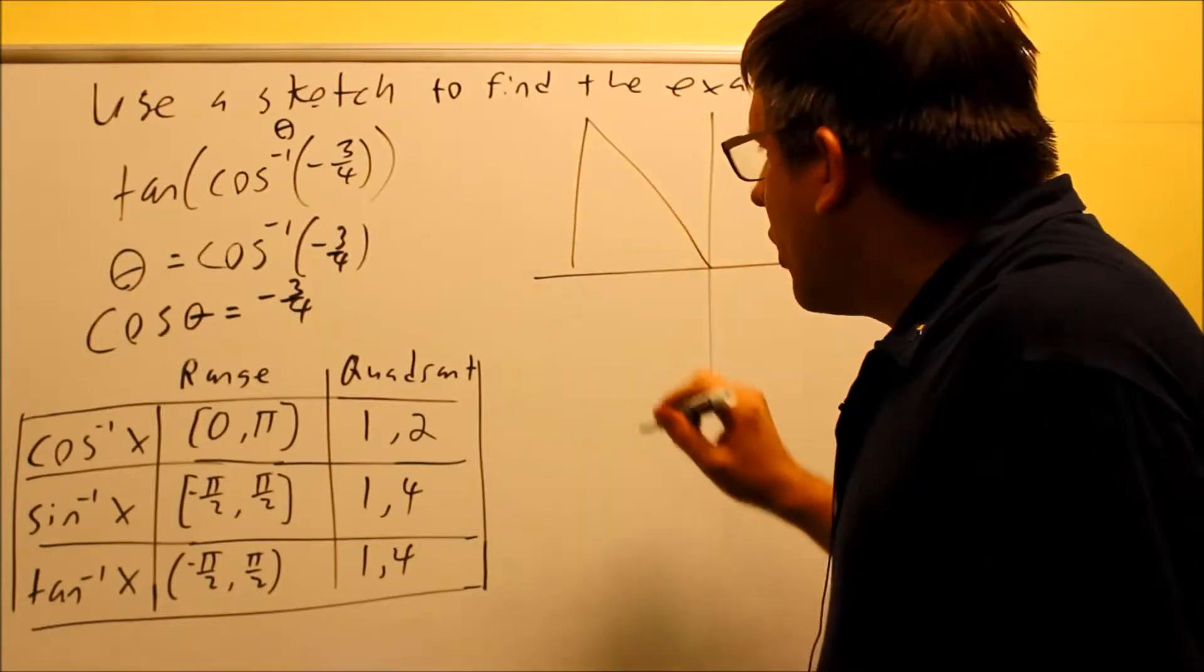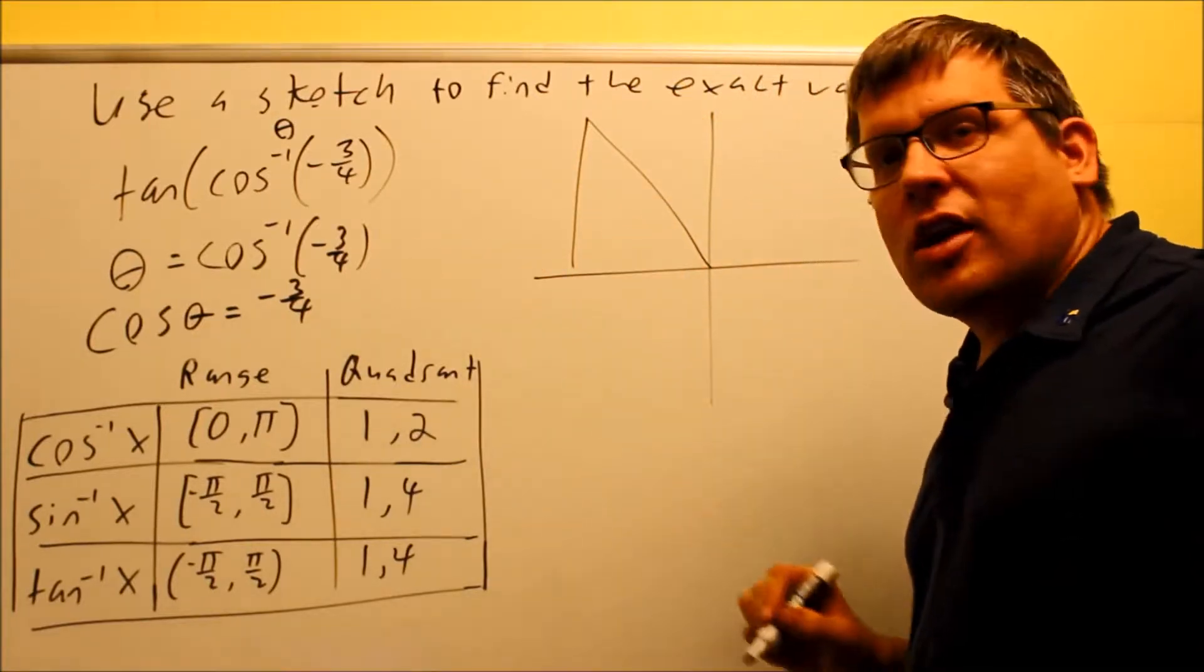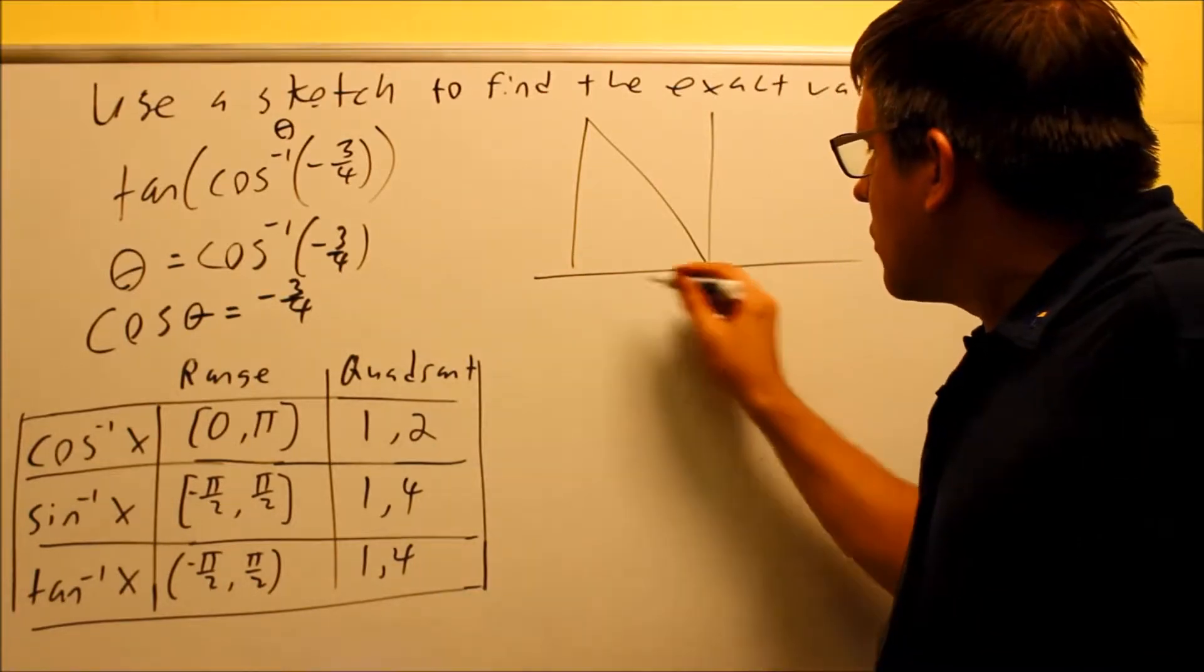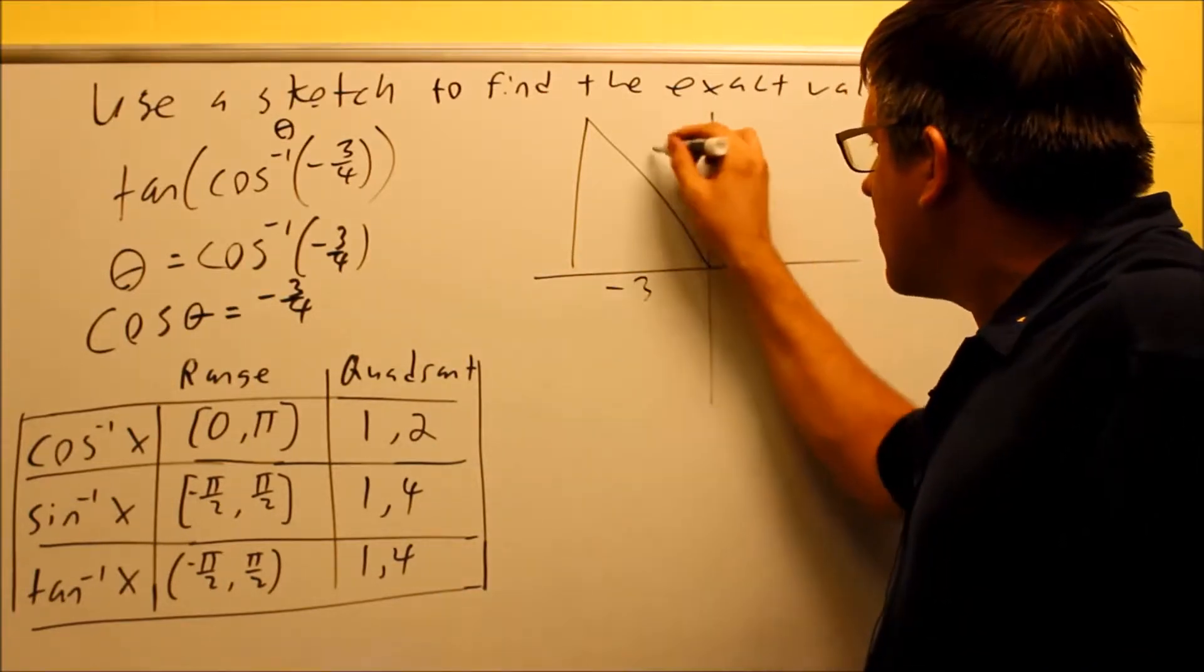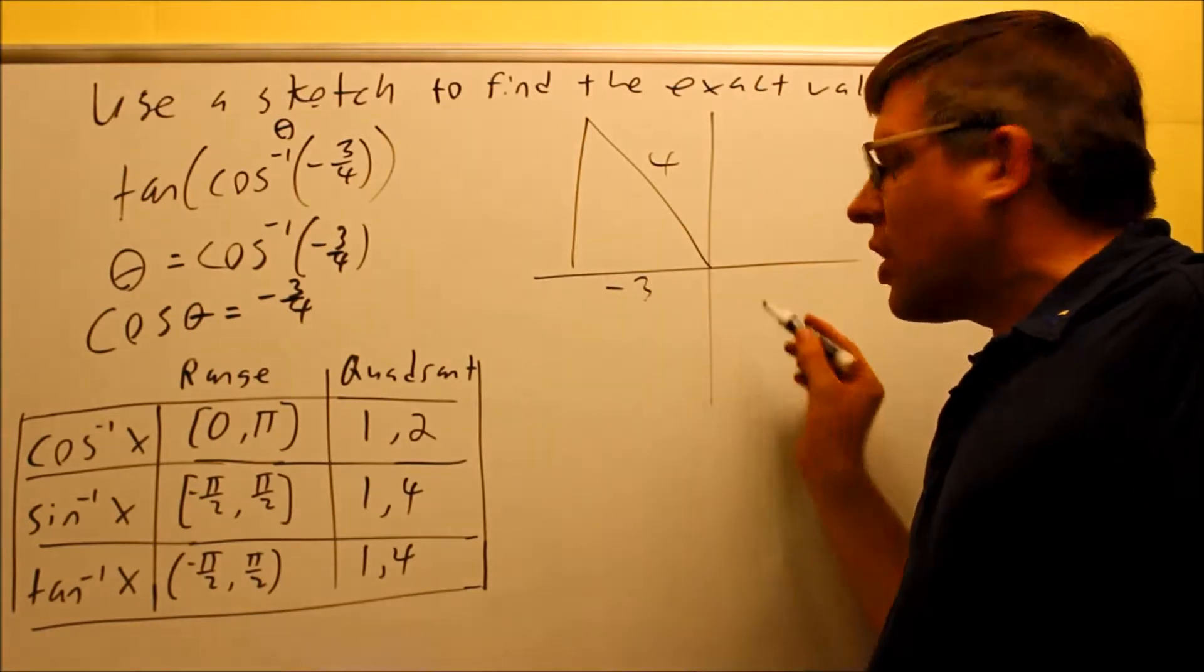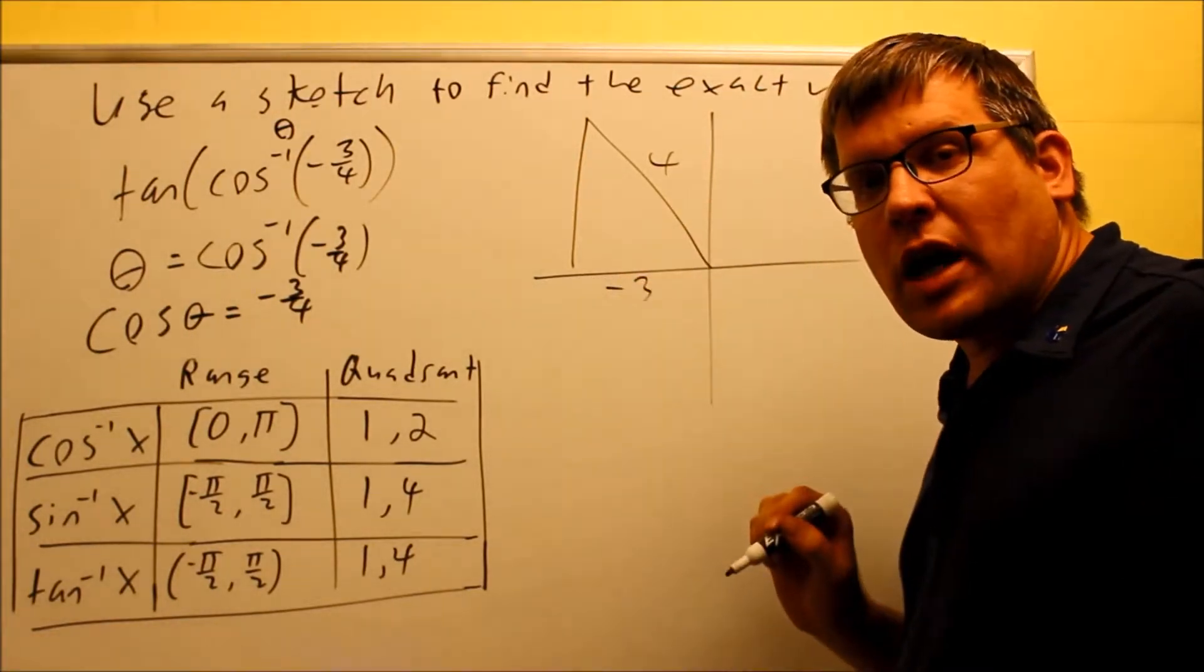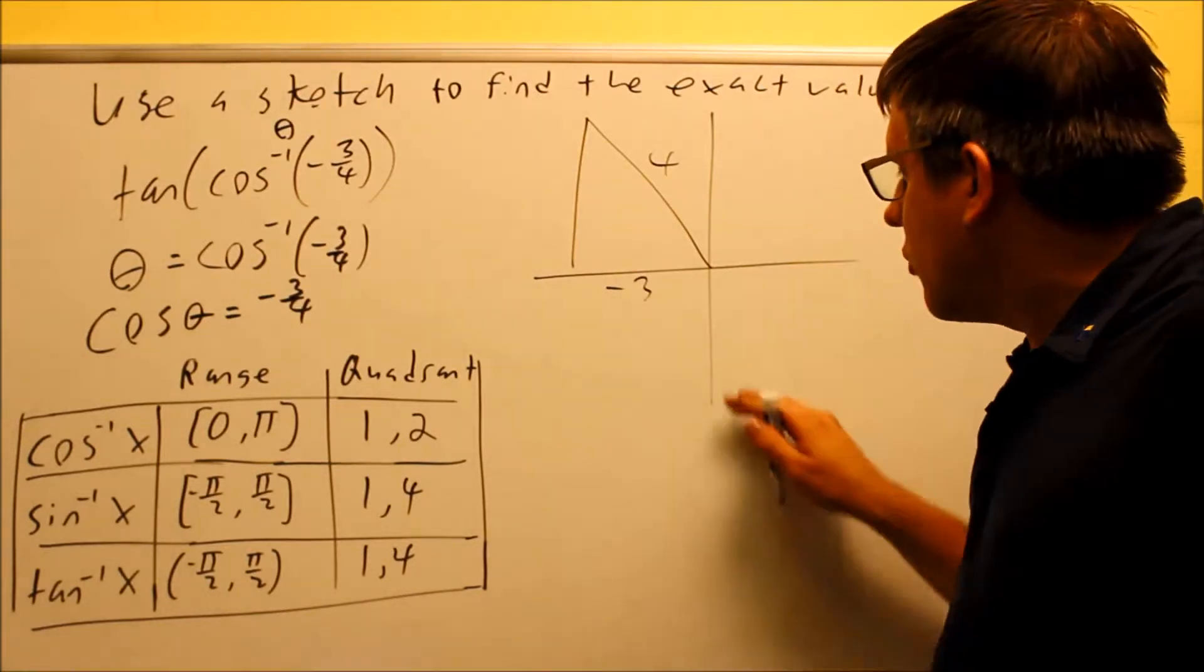So I'm going to draw that triangle right here. So I have negative three fourths. Okay, so that's adjacent over hypotenuse. This side is the one that has to have a negative because this is talking about negative x values. Hypotenuse is always positive regardless of the quadrant that you're in. So we know we have that.